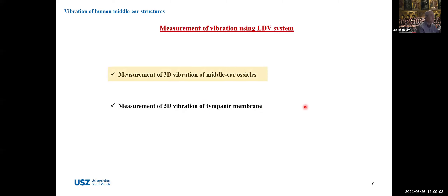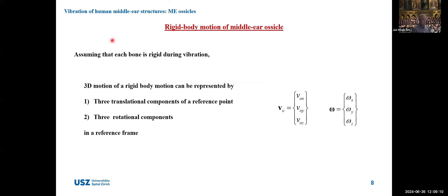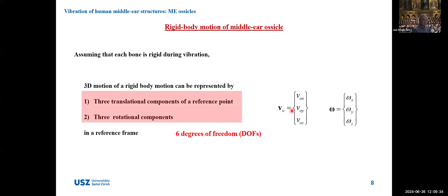Let me start from the measurement of 3D vibration of middle ear ossicles. First, let's assume that each bone is rigid during vibration. Then, 3D motion of all rigid body motion can be represented by three translational components of a reference point and three rotational components in a reference frame — so thoroughly, we have six components. Three-dimensional motion of a rigid body can be described with six degrees of freedom.